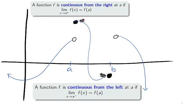An intermediate step towards continuity is one-sided continuity. If the actual value equals the left-hand limit, the function is continuous from the left. And if the actual value equals the right-hand limit, the function is continuous from the right.